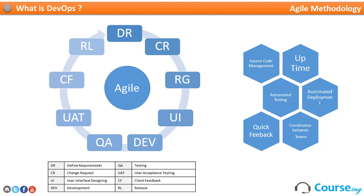In agile methodology, at every milestone the customer is involved, the client is involved, the development team is involved, and the QA team is involved. That increases the confidence of the client, making sure that development is under progress, under control, and everyone is properly informed.